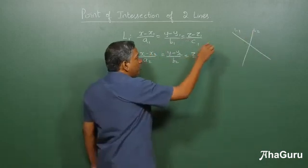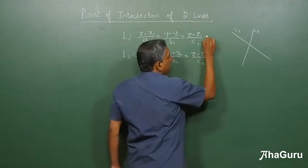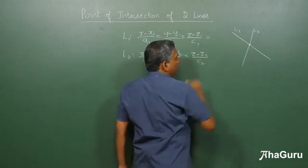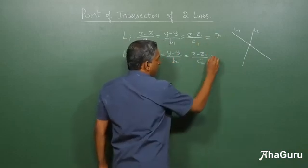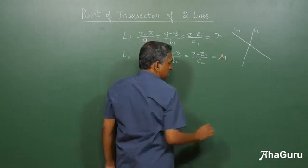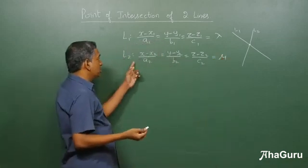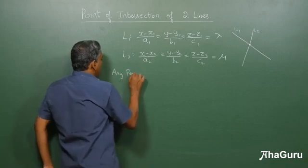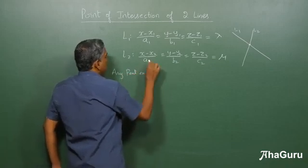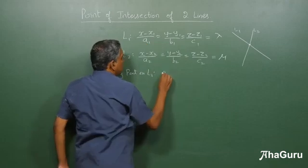Now any point on L1 you can find by, so let's say this is the point we want to find. We know that any point on L1 if you put lambda, and this is mu, this is the standard convention used. We can write any point on L1 is given by a1 lambda plus x1,